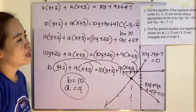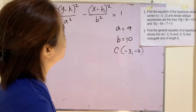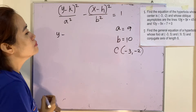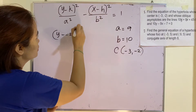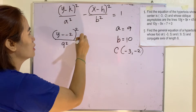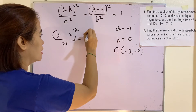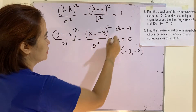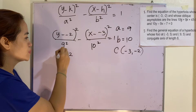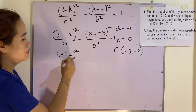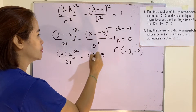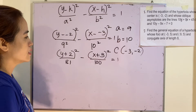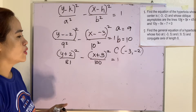We can now write the equation of the hyperbola. With center (negative 3, negative 2), a equals 9, and b equals 10, the standard form is: (y plus 2) squared over 81 minus (x plus 3) squared over 100 equals 1. This is the standard form of the equation of the hyperbola.